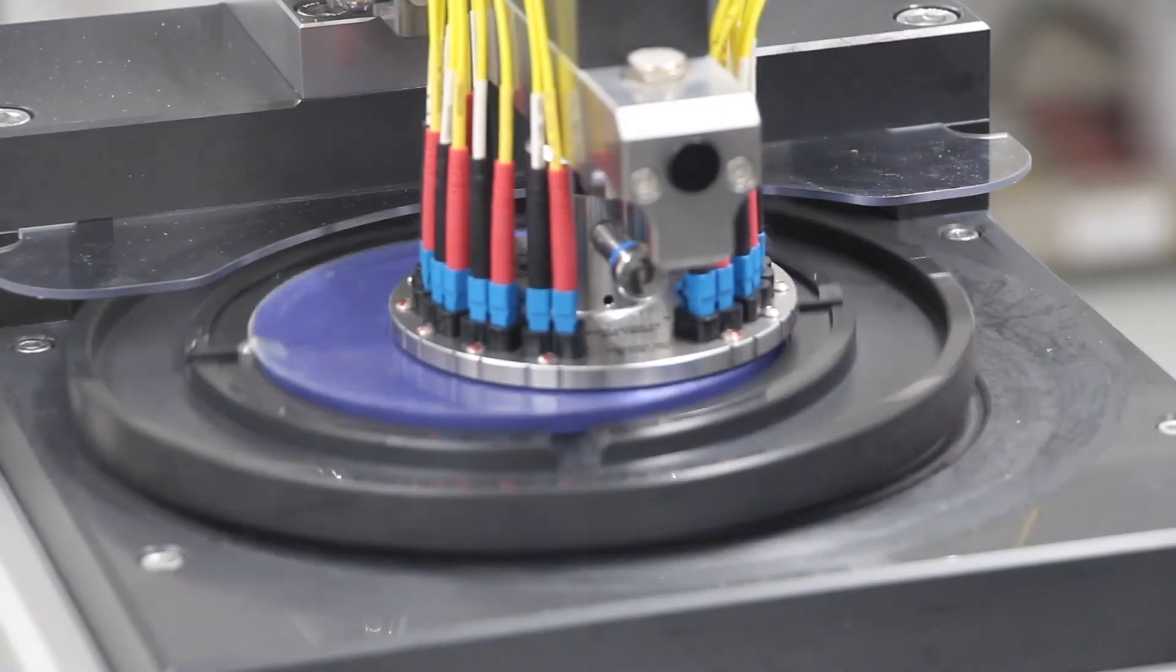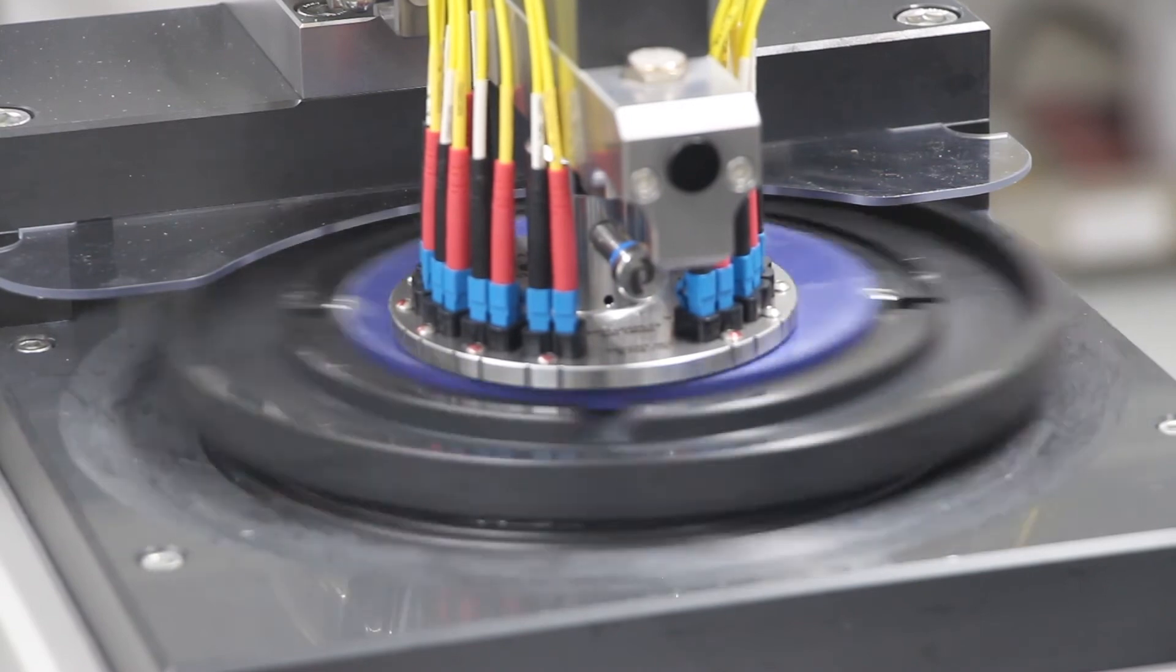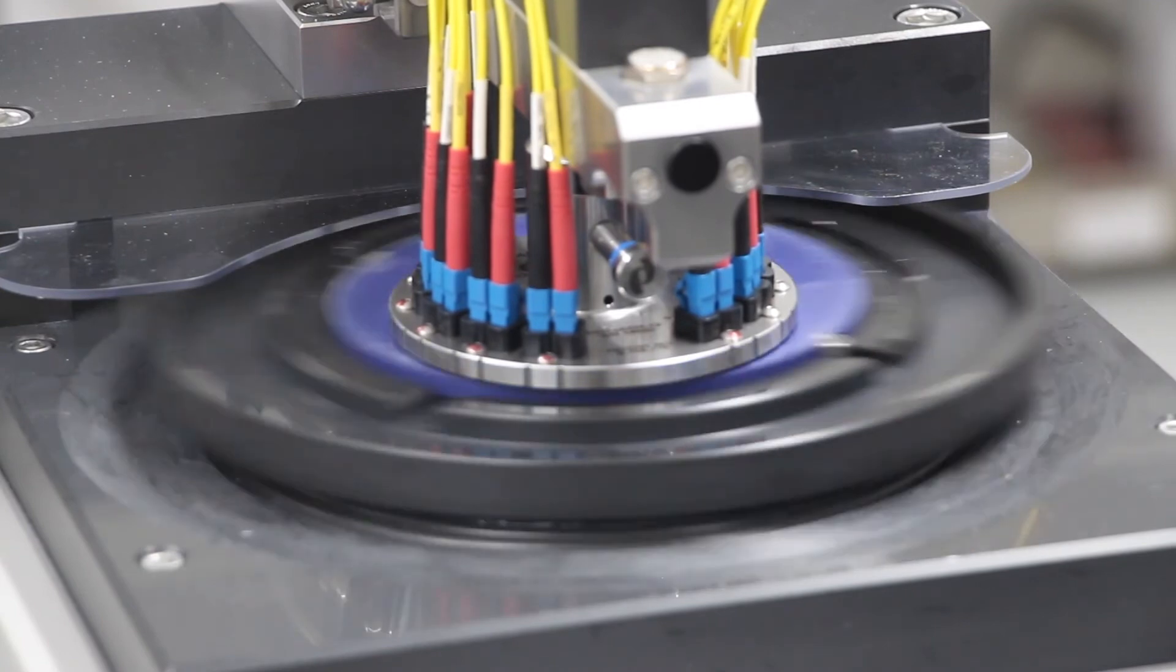Premium polishers apply two rotation movements, circular and orbital, to optimize the polish as well as make maximum use of the film and surface.